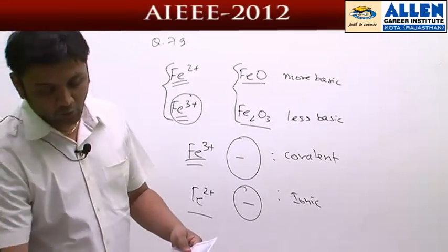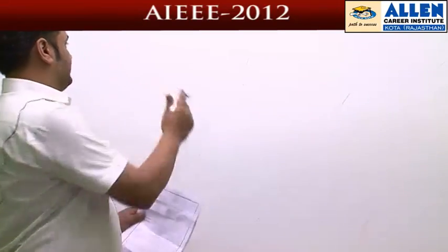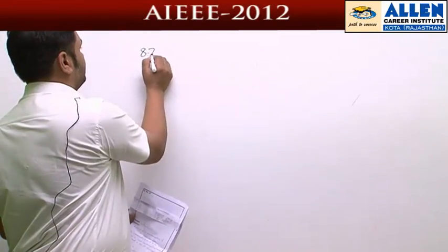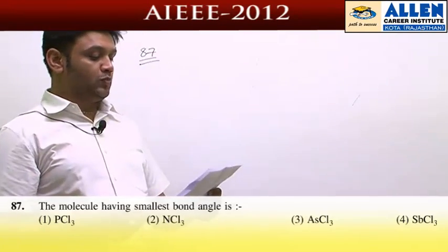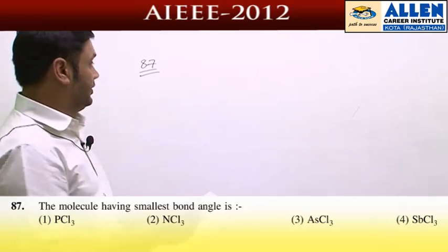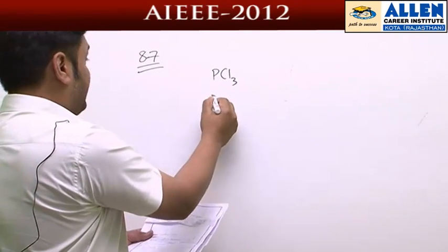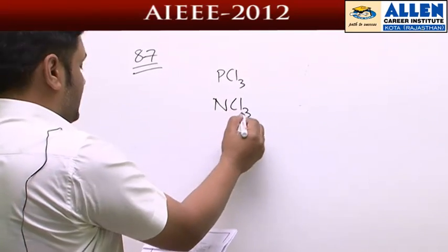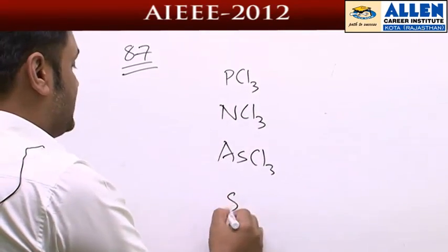On to the next one, question number 87. The question asks about the molecule having the smallest bond angle. We are given four molecules: PCl3, NCl3, AsCl3, and SbCl3.